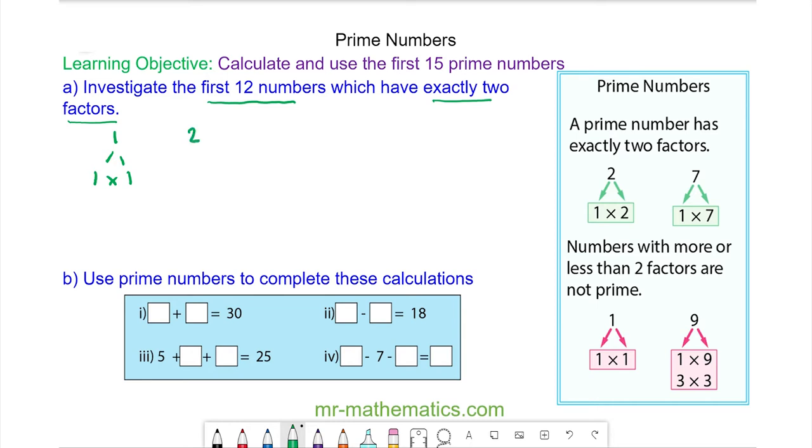If we look at number two, two has two factors which is one and two, so two is a prime number. If we look at the number three, again it has two factors, one and itself, so three is also prime.